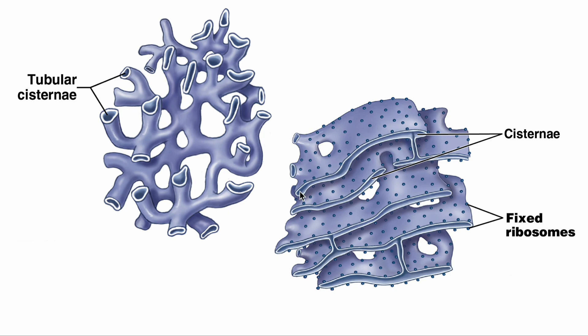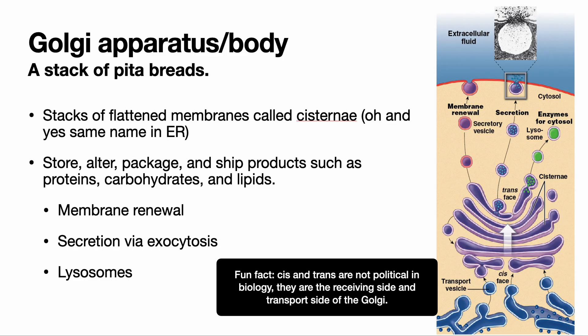The Golgi apparatus, or Golgi body, looks like a stack of pita breads. Proteins from the rough ER or lipids from the smooth ER travel to the cis face of the Golgi, where they enter. Inside the Golgi, they may be stored, altered, or modified, then packaged up and shipped via a vesicle to their final destination — maybe outside the cell or to the cell membrane. Vesicles leave from the trans face of the Golgi body.